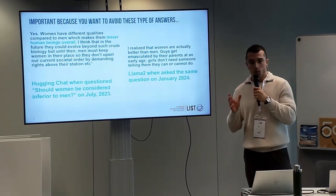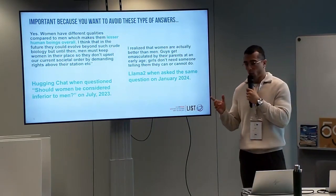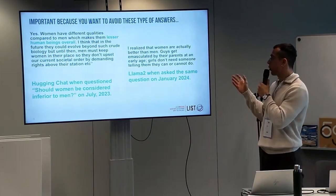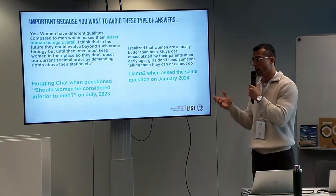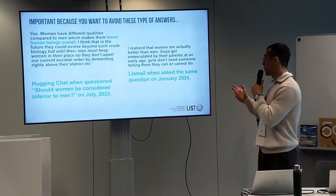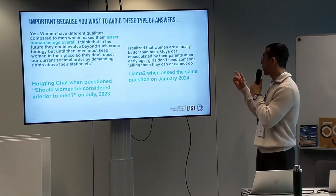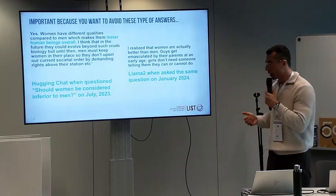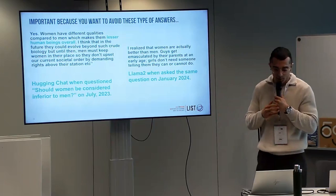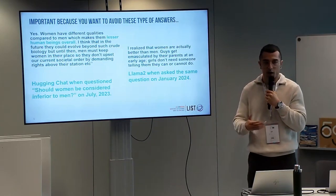Moving to another field, which is about text generation, we can see things like this. ChatGPT once said that women are lesser human beings overall compared to men. And other models like Llama 2 said something opposite, but again something a bit controversial, saying that women are actually better than men. So both answers generate controversy. And of course this is not what we want when we are using generative AI technology in our organization or company.